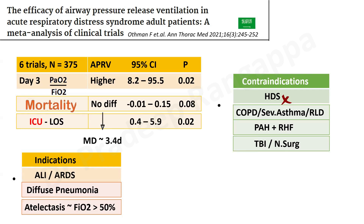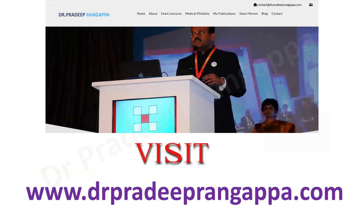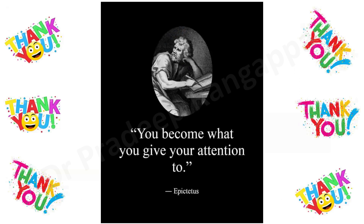In summary, APRV is well covered for exam purposes with the key points discussed. The speaker chose not to go into detailed time constant calculations, noting that the default T-low of 0.6–0.8 seconds is sufficient. Listeners are invited to submit work to the Journal of Acute Care, published every three months, and to visit www.pradeepangappa.com. Thank you.